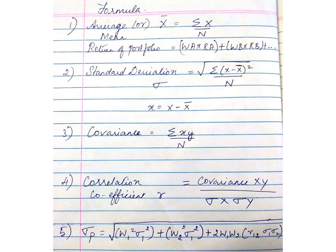The return on the portfolio is equal to the weight of security A multiplied by the return of security A, plus the weight of security B multiplied by the return of security B. In our problem, these are securities X and Y. Next is to calculate the standard deviation: square root of Σ(X − X̄)² / N. Here, (X − X̄) is denoted as small x.